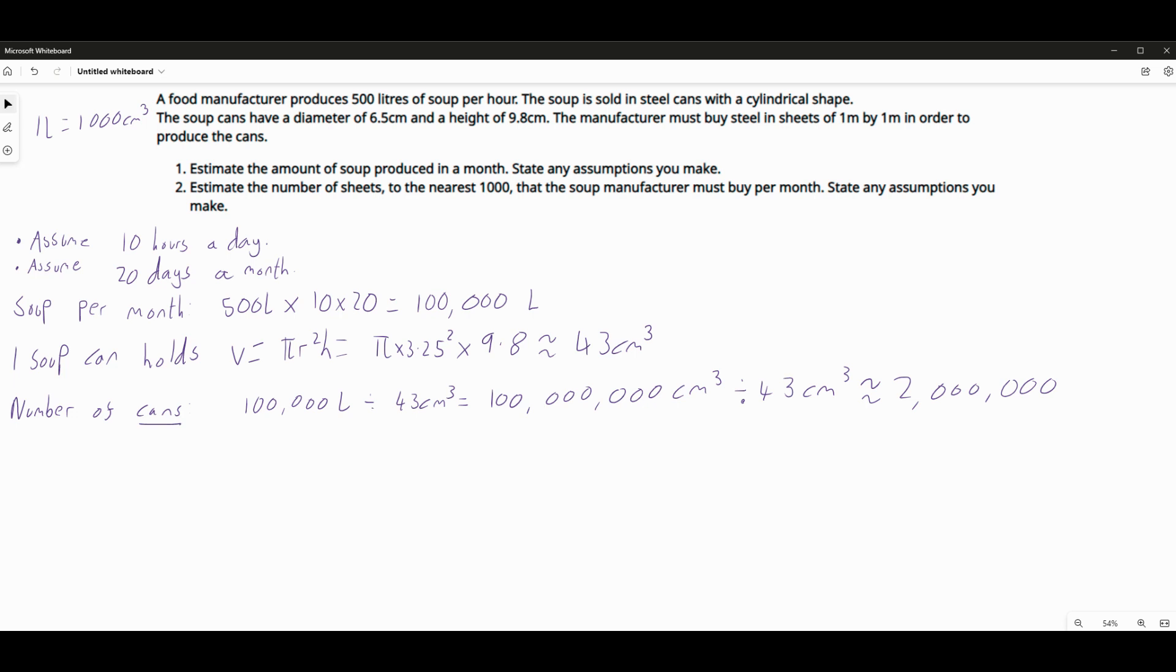So the number of cans in a month is 2 million. I need 2 million cans every month, or this manufacturer does, based on our assumptions.